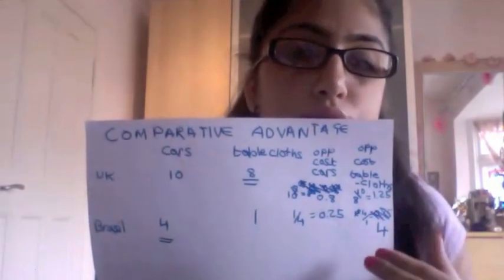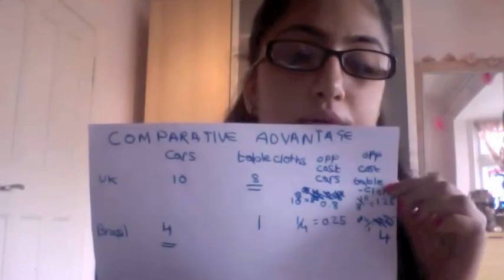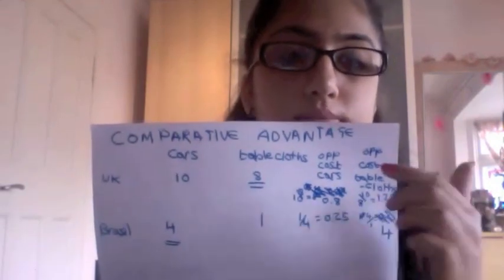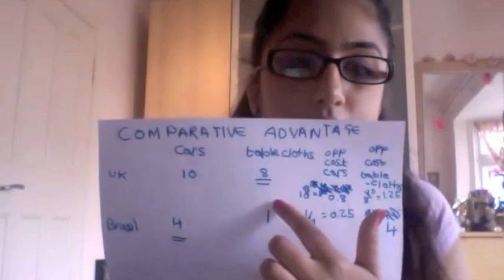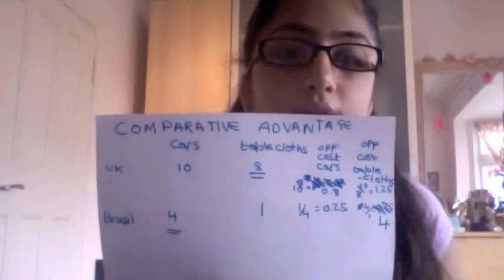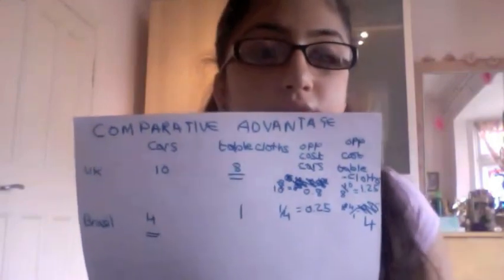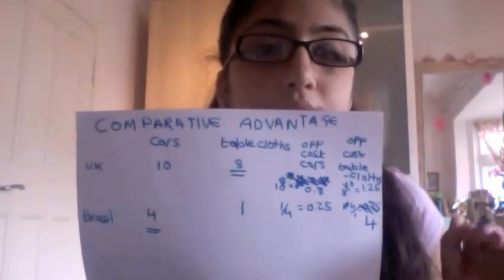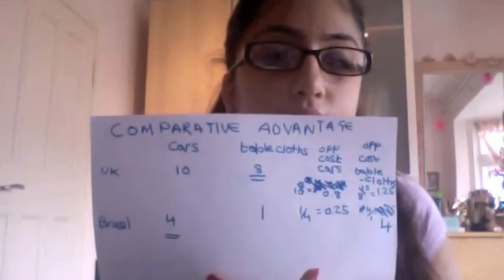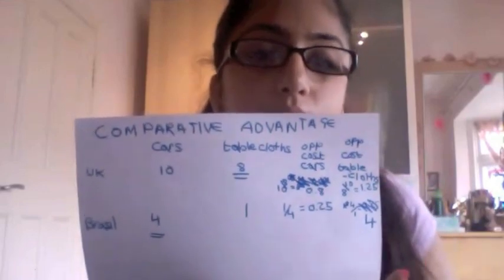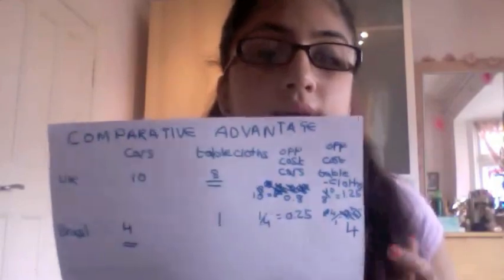The opportunity cost is clearly smaller for the UK in tablecloths, so the UK should specialise in producing tablecloths. The world output with comparative advantage becomes 8 cars and 16 tablecloths.